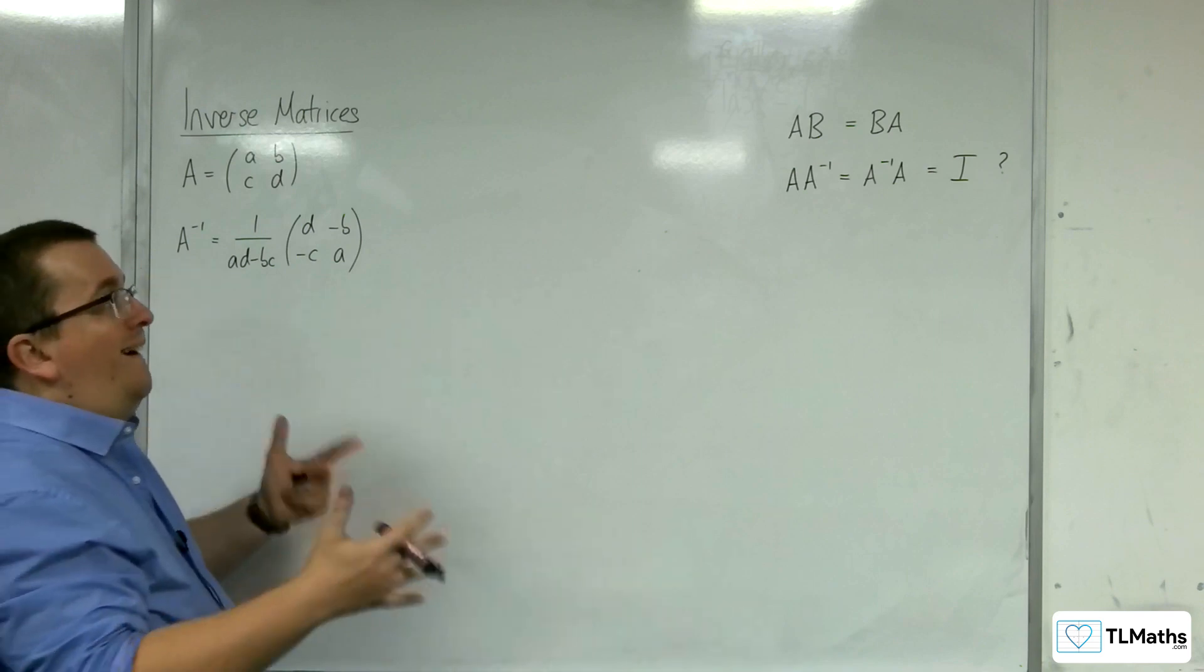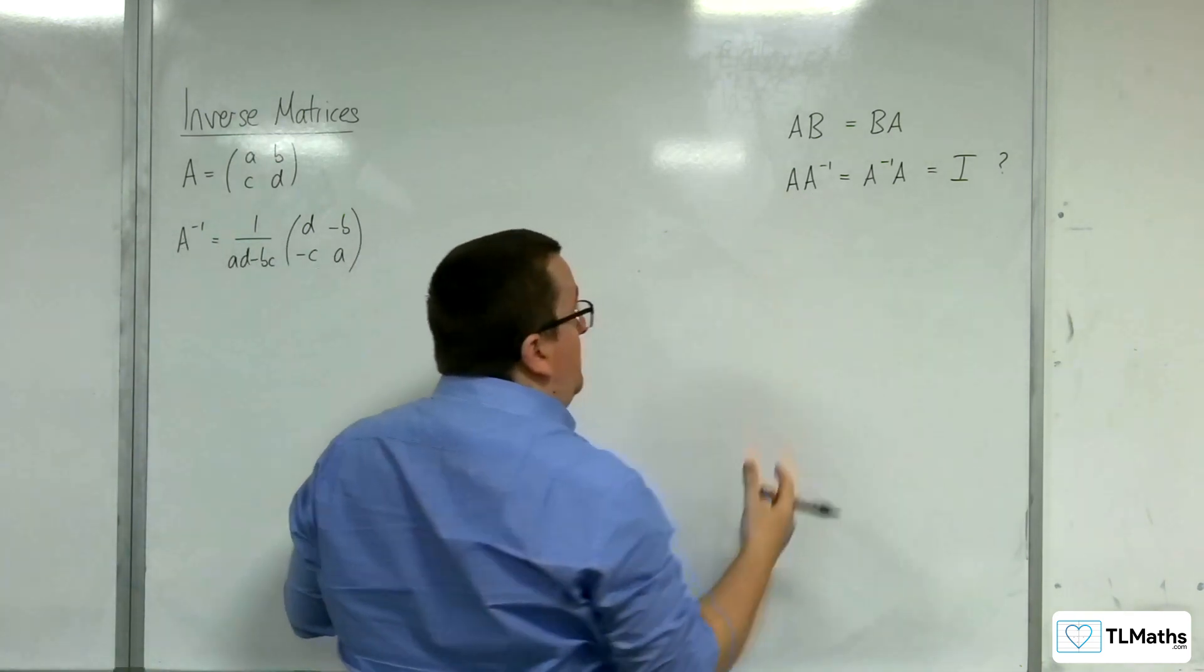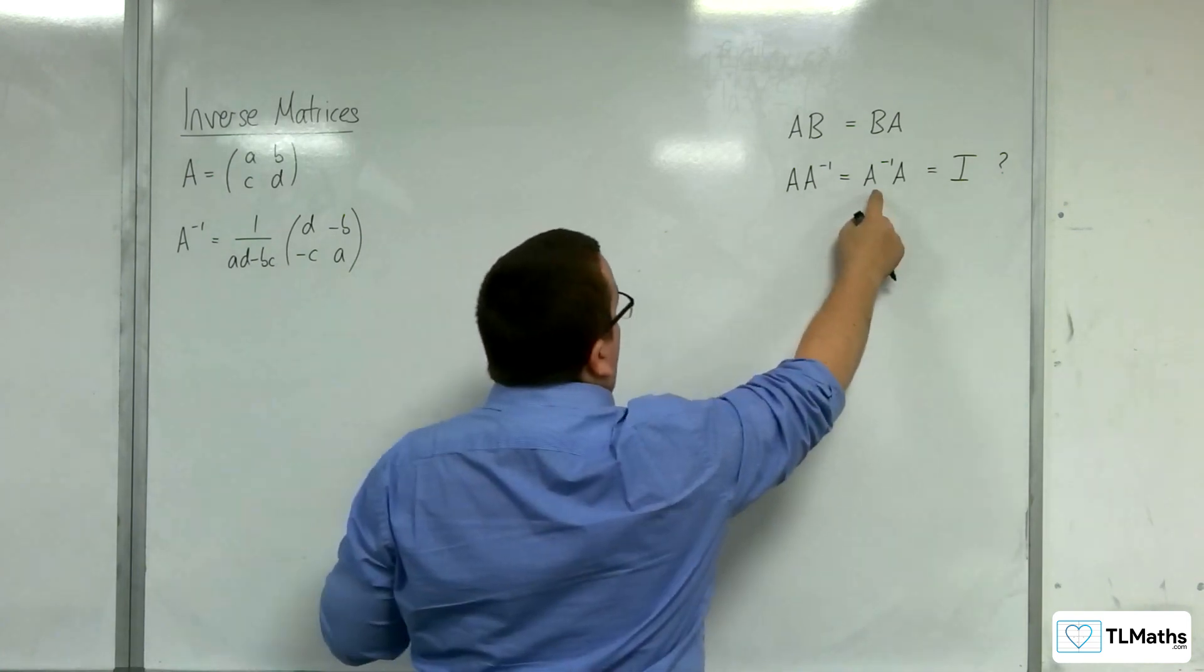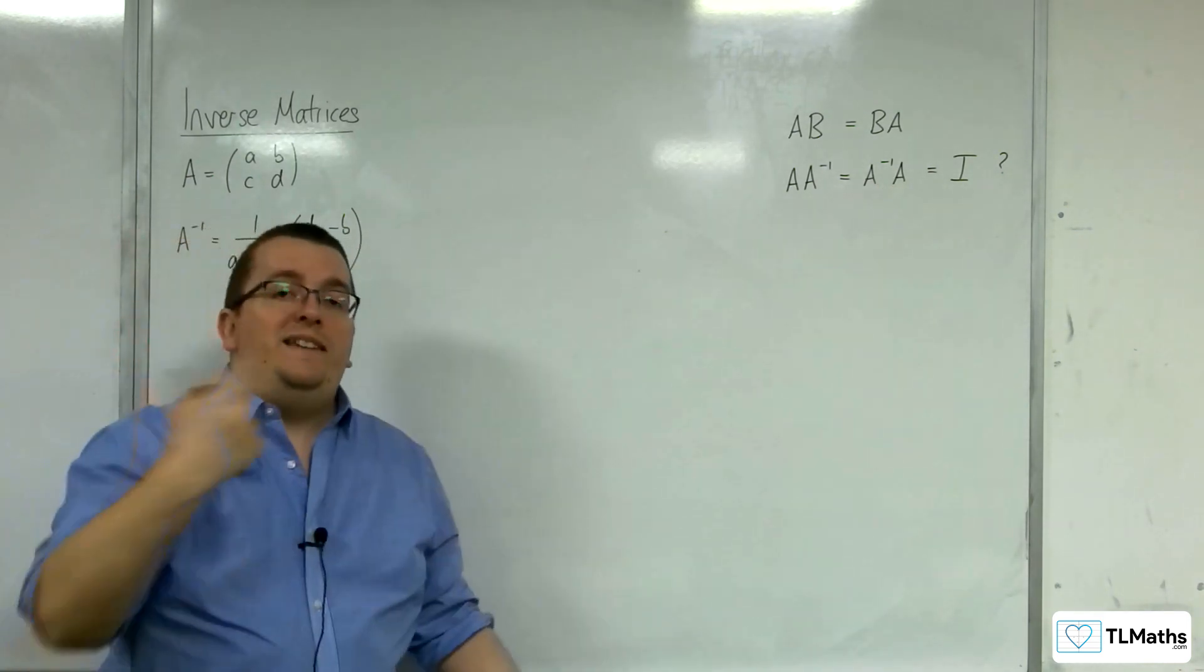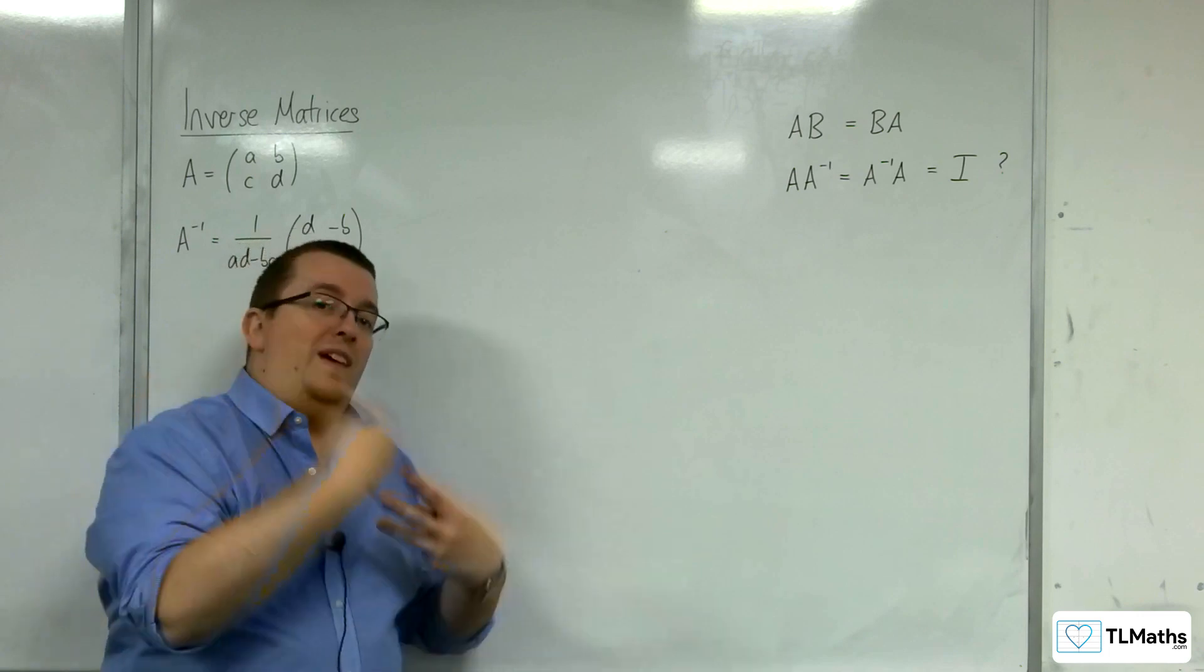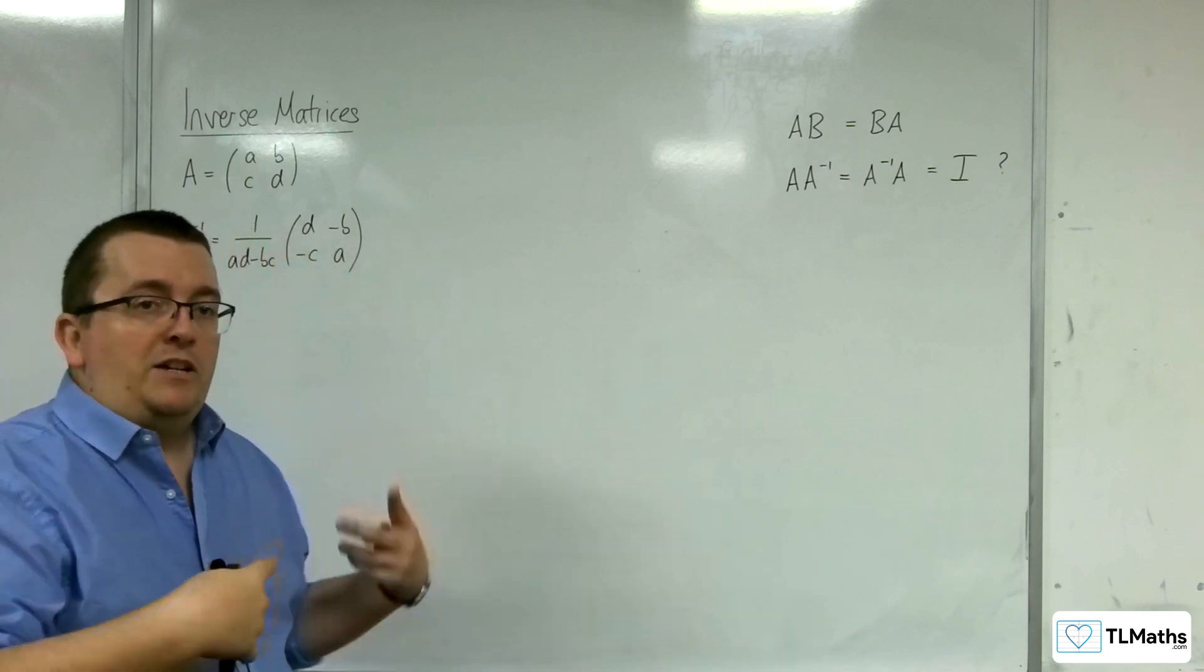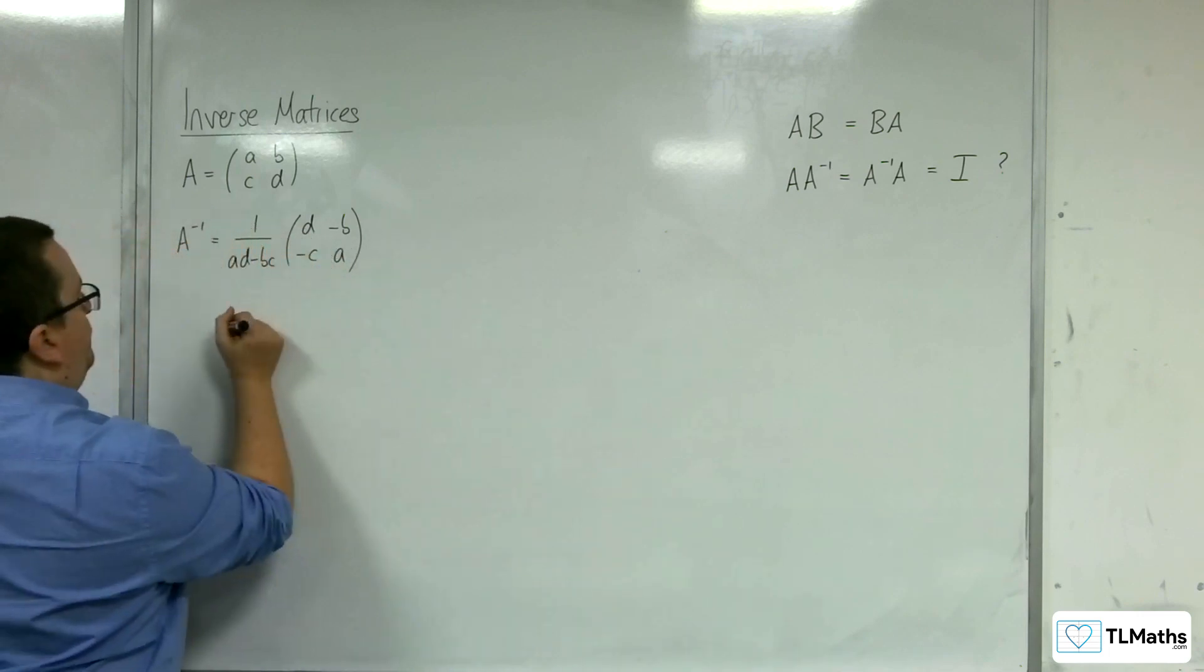Now, in order to show that, I need to multiply A by A^-1 to get the identity matrix, and I must also multiply A^-1 by A to get the identity matrix. I need to do it in both directions, and that will show that it doesn't matter which way round I do it.